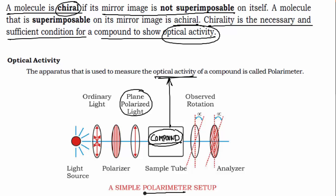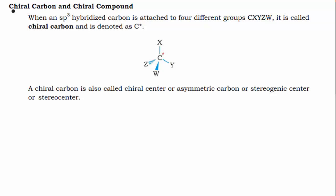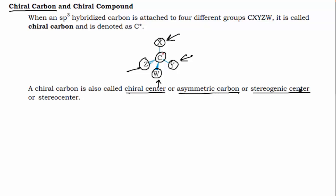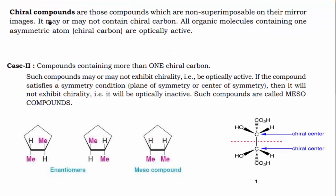Not everyone has a polarimeter tube, so there are theoretical justifications for optical activity as well. A chiral carbon is basically a carbon which has four different groups — x, y, w, and z. If a carbon in a compound is attached to four different groups, that carbon is called a chiral carbon, also known as a chiral center, asymmetric carbon, stereogenic center, or stereocenter.